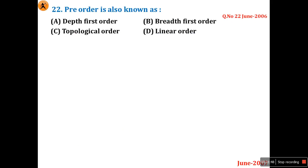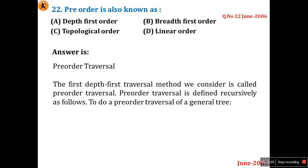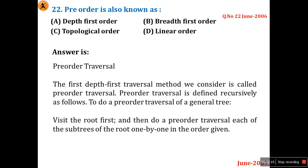Question 22: Pre-order is also known as depth-first order, breadth-first order, topological order, or linear order — four options. Pre-order traversal is implemented using depth-first order because it works recursively. Depth-first search is an application of the recursive technique. Pre-order visits the root first, then does a pre-order traversal of each subtree of the root one by one.